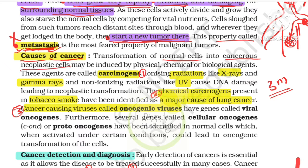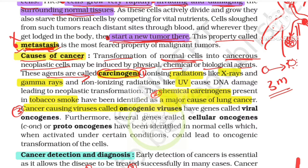The transformation of normal cells into cancerous cells involves certain agents. The agents which transform normal cells into cancerous cells are called carcinogens.